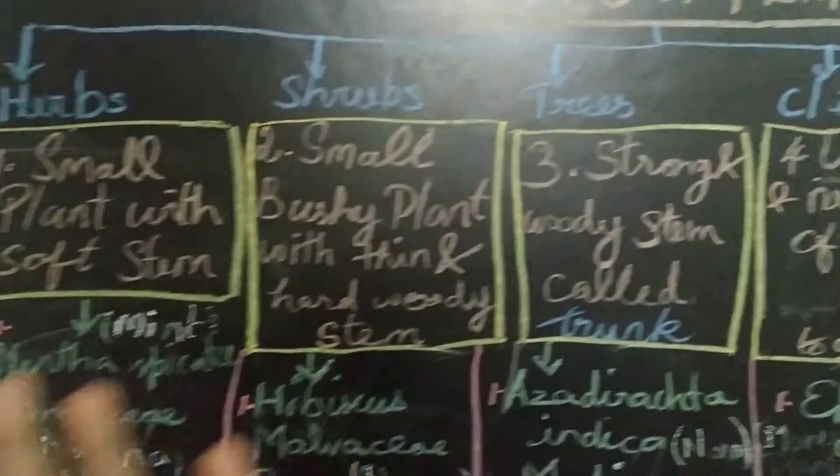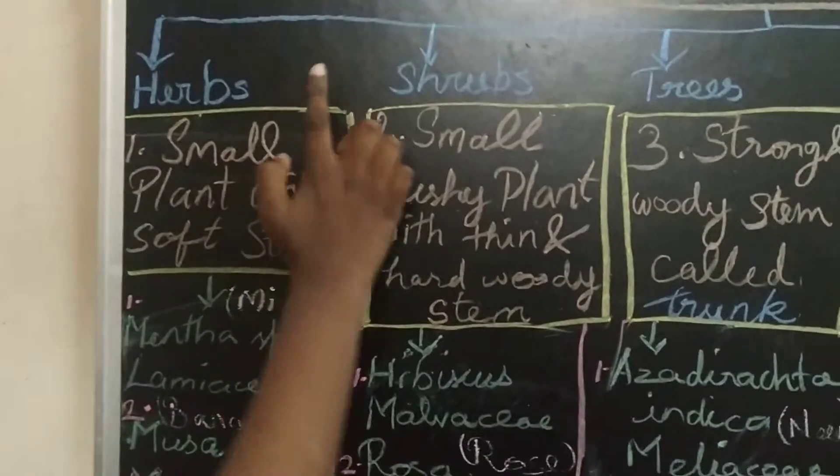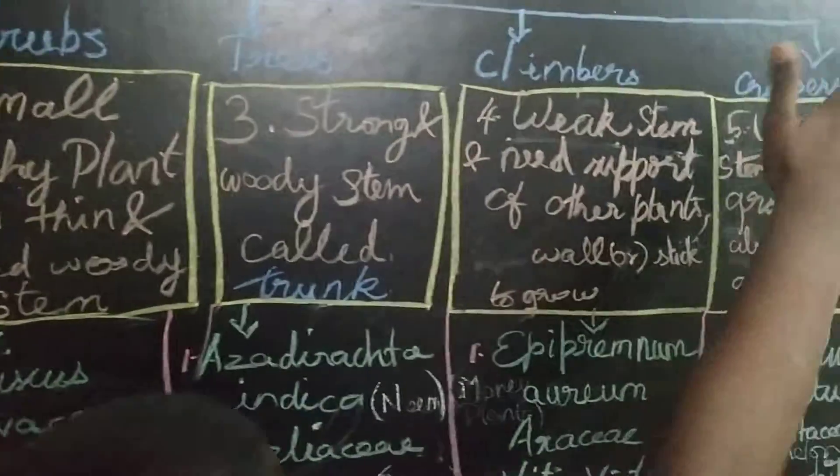The 5 types of plants are: Herbs, Shrubs, Trees, Climbers, and Creepers.